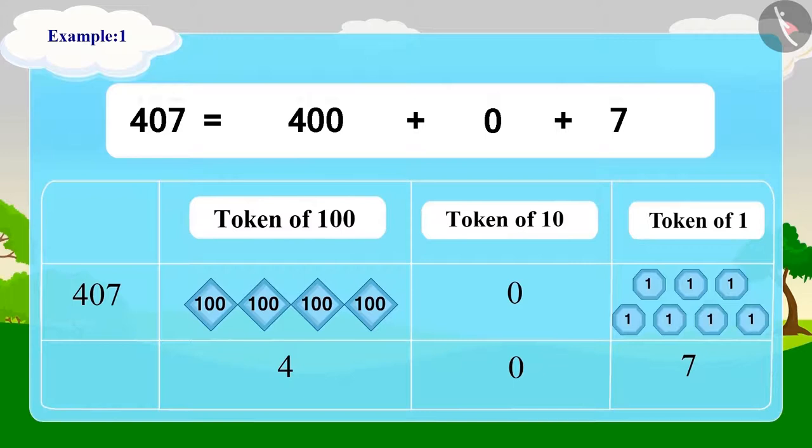In this way, we can write 407 toffees in tokens of 100, 10, and one.